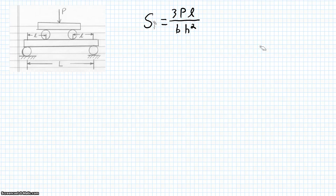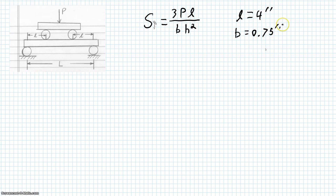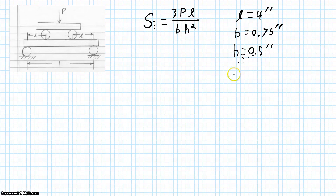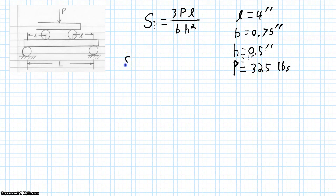The space between the rollers is supposed to be four inches. The member is supposed to be three-quarters of an inch wide by half an inch tall. We run this through the Instron machine and we get a failure load of 325 pounds. We plug in all these numbers into our equation and we get that our ultimate failure strength is going to be 20.8 kips per square inch.